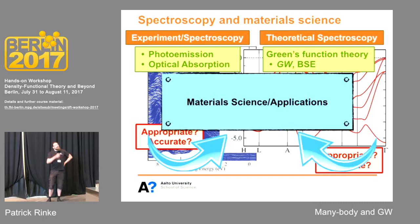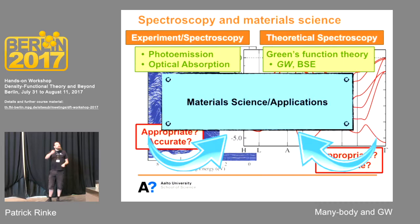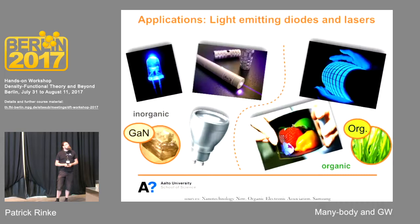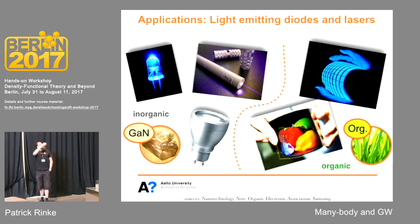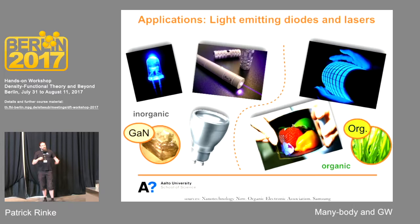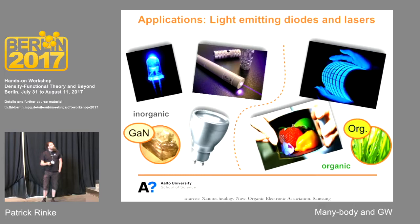There are many forms of spectroscopy and many related theories. Today I'll pick the example of photoemission and briefly touch on optical absorption, then introduce Green's function theory and two approximations: GW and BSE. I'll illustrate this with examples from the field of nitrides — light emitting diodes that are revolutionizing solid-state lighting, lasers, and photovoltaics — and on the organic side, the counterpart in organic electronics, where you can make light emitting or light absorbing devices like these displays.